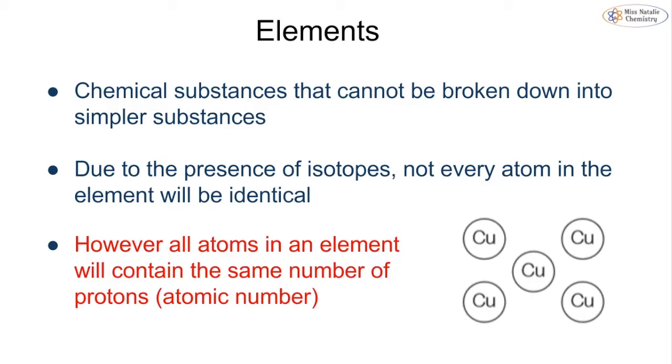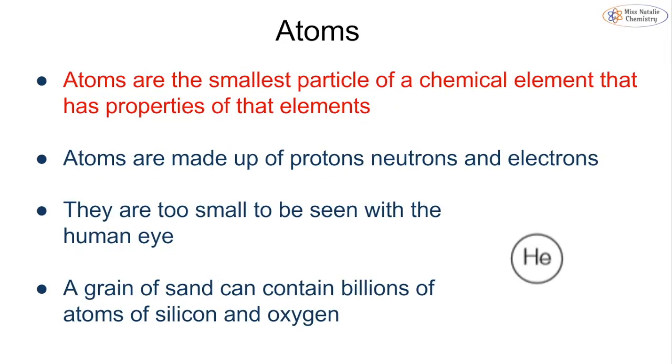Let's start by looking at our key terms. I'm going to go through these very quickly because you should know all of these from not only GCSE but also key stage 3. An element is a substance that contains the same type of atom. Remember, not every atom is identical because you have different isotopes, but every atom in the element contains the same number of protons. Atoms are the smallest particle of a chemical element that has properties of that element, made up of protons, neutrons and electrons.